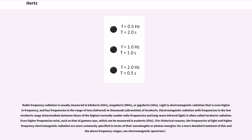Even higher frequencies exist, such as that of gamma rays, which can be measured in exahertz. For historical reasons, the frequencies of light and higher frequency electromagnetic radiation are more commonly specified in terms of their wavelengths or photon energies. For a more detailed treatment of this and the above frequency ranges, see electromagnetic spectrum.